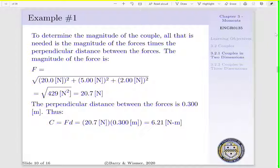Now the perpendicular distance between our two forces is 300 millimeters, or 0.300 meters. Thus, the magnitude of our couple is simply equal to the magnitude of our force times our perpendicular distance, 20.7 newtons times 0.300 meters, which equals 6.21 newton meters.